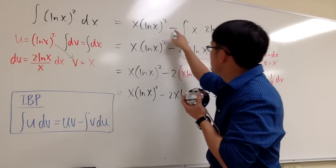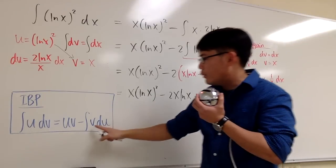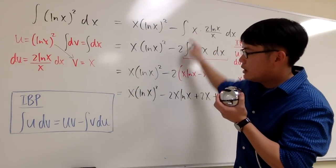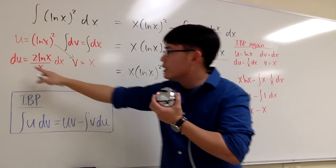And then we have to subtract the integral, subtract the integral. We'll have to put down v first, v is the x, I'll put this down. And then du, du is all this, 2 ln x over x dx.